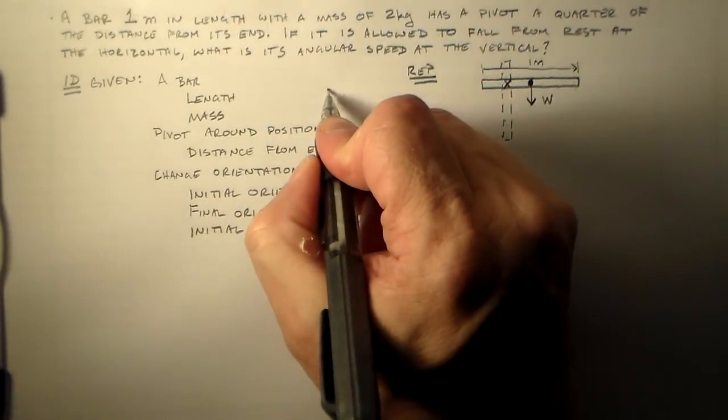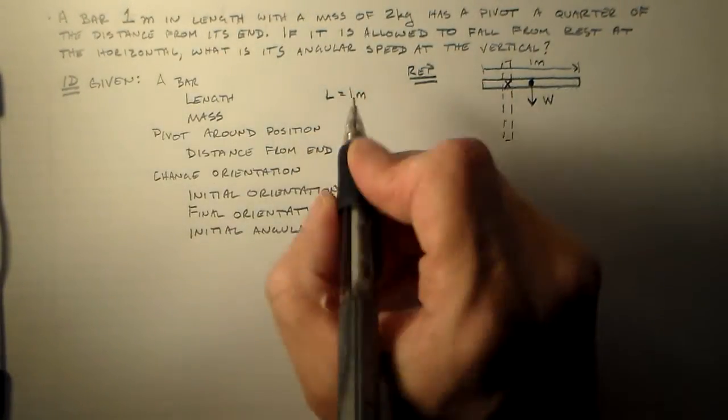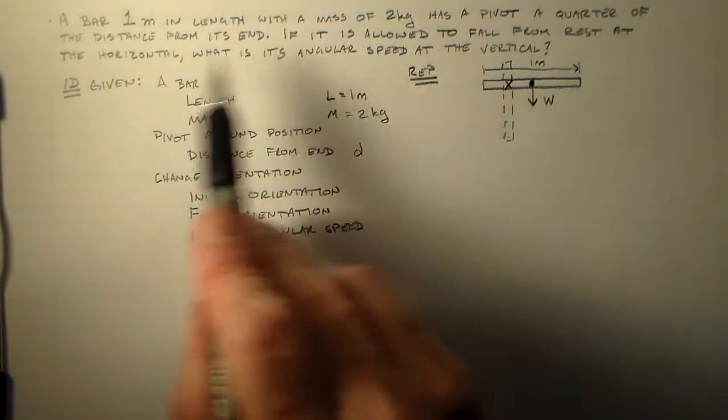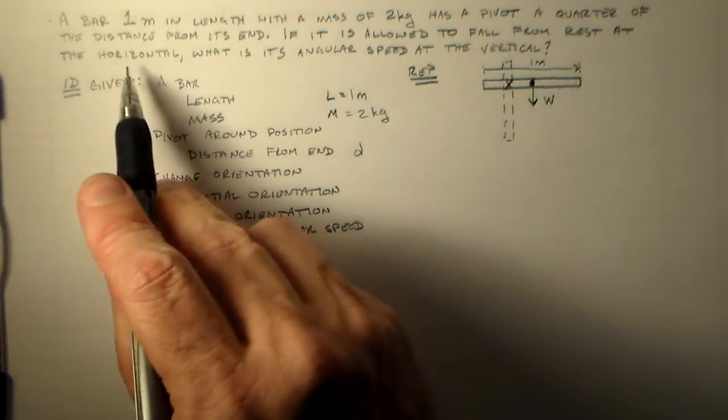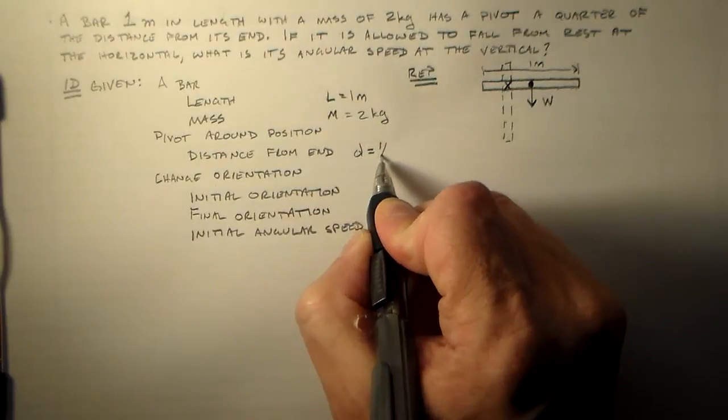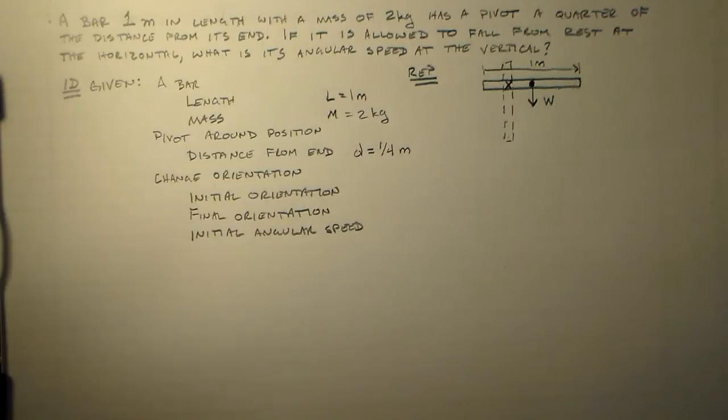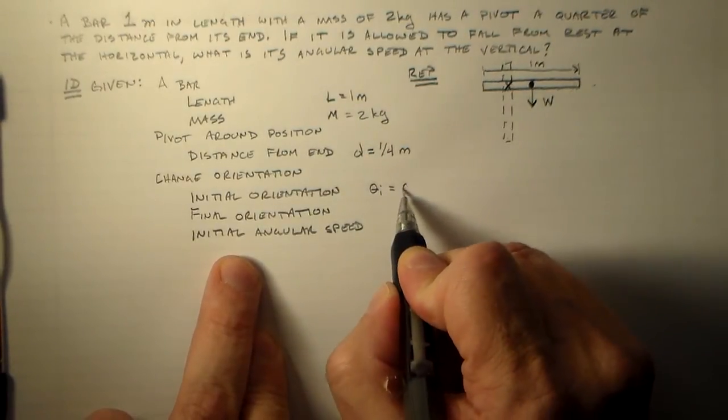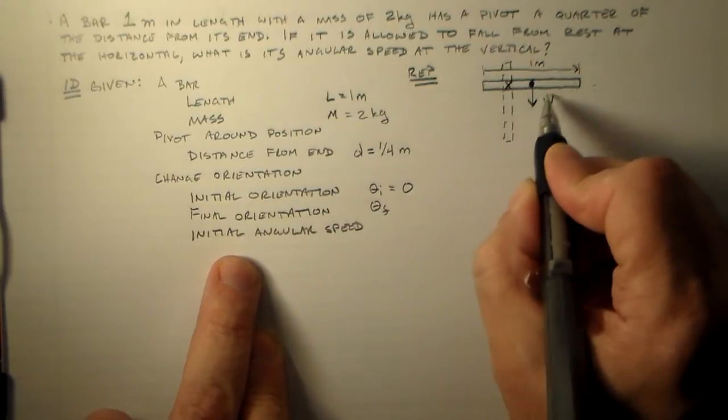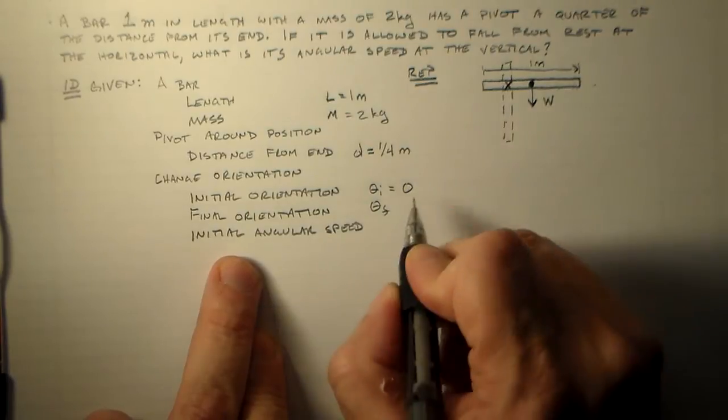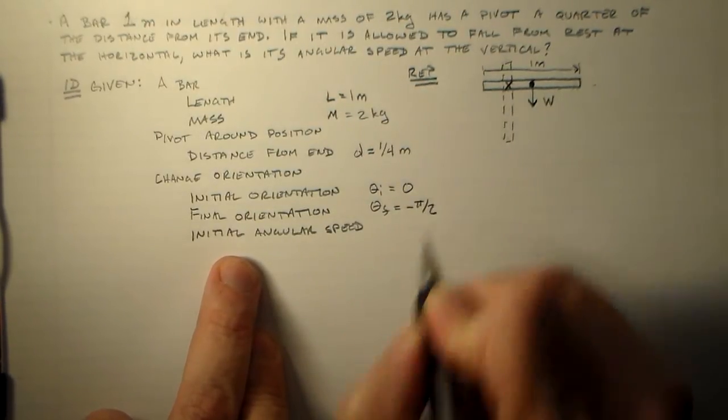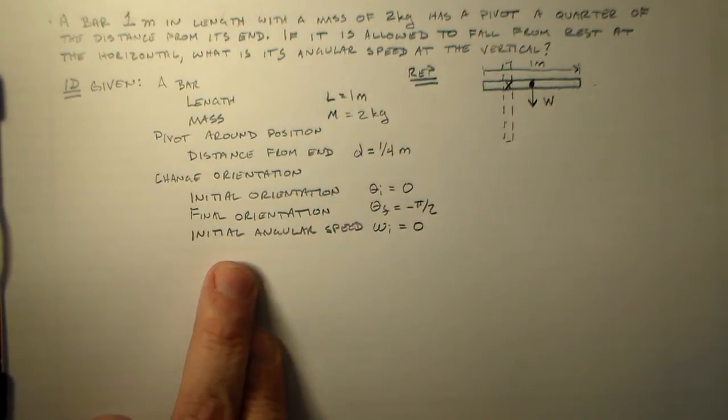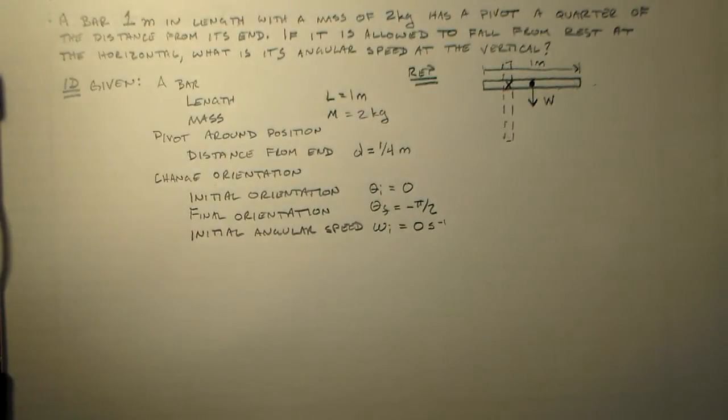The length is L equals one meter. Its mass is M equals two kilograms. The pivot distance from the end is one quarter of a meter, or d equals 0.25 meters. The initial orientation theta_i is horizontal, which is zero radians. The final orientation will be minus pi over two, since positive is counterclockwise and this is clockwise. The initial angular speed omega_i equals zero. That's what we know.